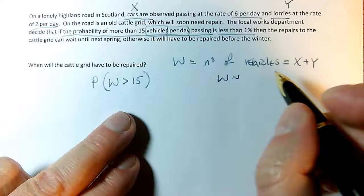This is the probability I have to compare with 1%. 0.0082 is actually less than 0.01, which is 1%. What happens if it's less than 1%? The repairs to the cattle grid can wait until next spring. So the cattle grid gets repaired in the spring. I've got a beautiful answer in context. That's how we do questions where we have to combine two Poissons.